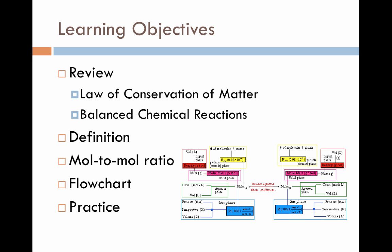We'll start with a quick overview of what's about to happen, with a little review in the beginning. The law of conservation of matter and the ability to balance chemical reactions are a big part of what stoichiometry is all about, so we'll go over those quickly. We'll then define what stoichiometry actually is a little more formally. All of the math in stoichiometry hinges around something known as the mole-to-mole ratio, and we'll talk about what that is and how it's used in the mathematics.